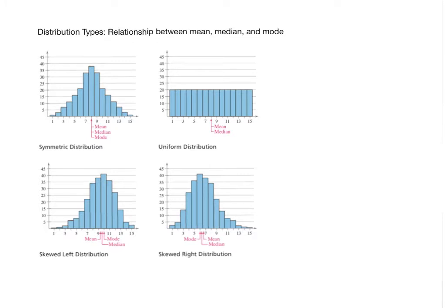Now let's go back to the question brought up previously: why do we compute a mean, median, and a mode? Why not just one of them? What's the value of all three? To answer that, we're going to look at a couple of common distribution types. Not all data distributions will fit one of these four types, but these are four common ones, so let's go through each of them.